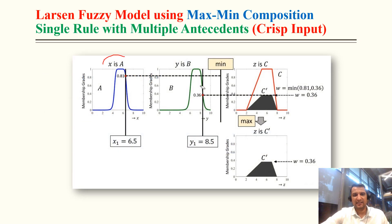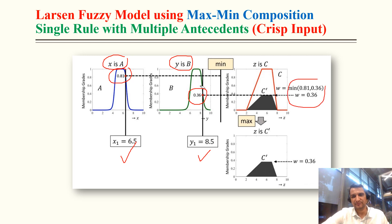For single rule with multiple antecedents with crisp input: when X = 6.5 the degree of compatibility is 0.81, and when Y = 8.5 the degree of compatibility is 0.36. Using max-mean composition, we take the minimum: 0.36. We scale down the output maintaining the shape, and that is the final answer.